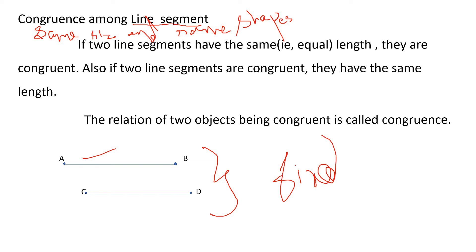If AB is equal to 5 cm and CD is equal to 5 cm and their measurements are equal, then I can say the two line segments are congruent. If they have the same length, then I can say they are congruent - AB is congruent to CD. The relation of two objects being congruent is called congruence.